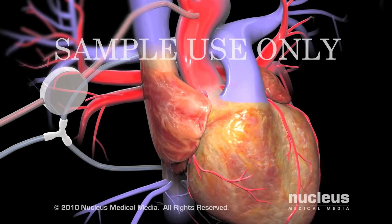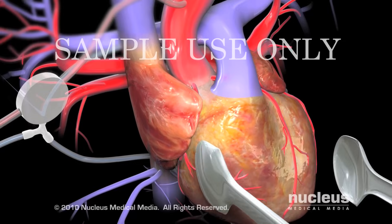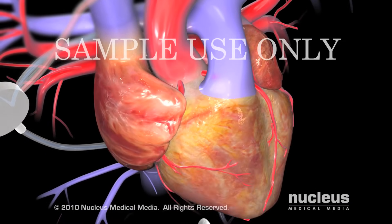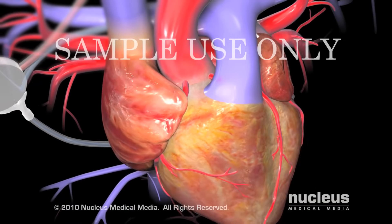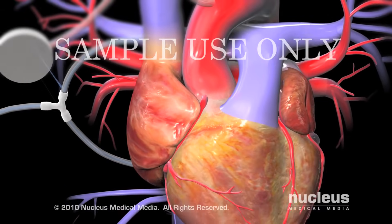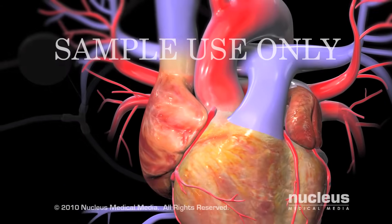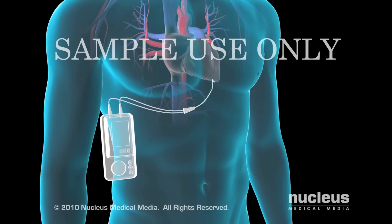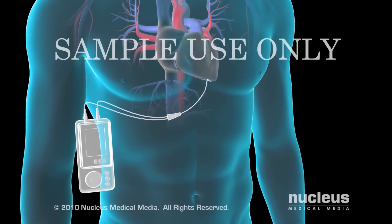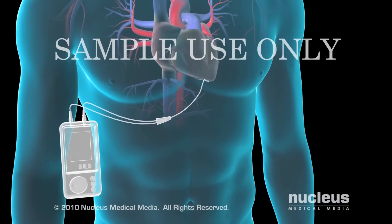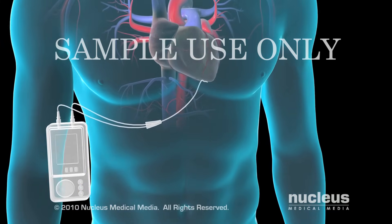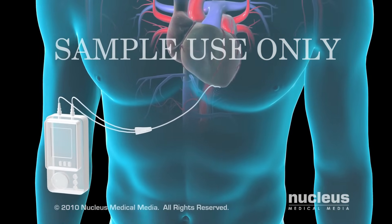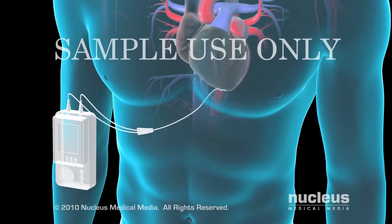If needed, an electric shock will be given to restart the heart. Once your heart is beating on its own, it will be detached from the heart-lung machine. Generally, temporary pacemaker wires will be placed on the surface of the heart to ensure the heart maintains a normal rhythm during recovery.